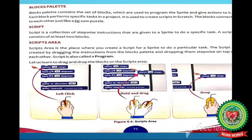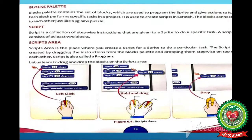On page number 73, our next component is blocks palette. Blocks palette contains the set of blocks which are used to program the sprite and give actions to it. Each block performs specific tasks in a project. Script is a collection of stepwise instructions given to a sprite. The last component is scripts area — it is the place where you create a script for a sprite to do a particular task.